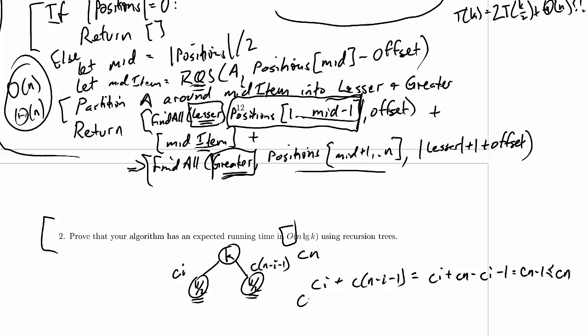It's totally safe to put cn here as the work in this level. And the same thing is going to happen every time we have a node with two children. The total length of lesser and greater in those two children is going to be no larger than the length of the array a in the parent node.